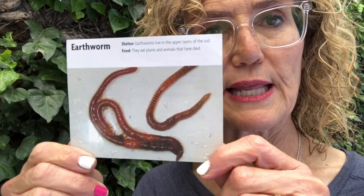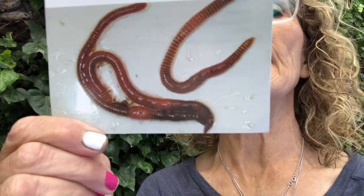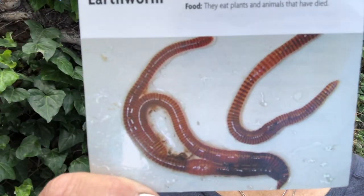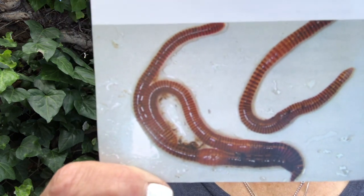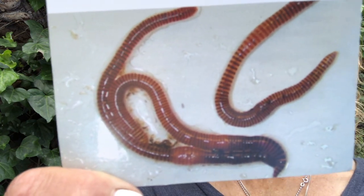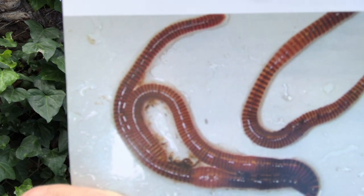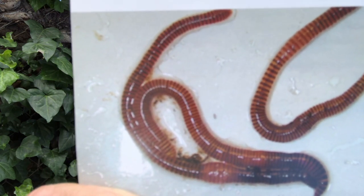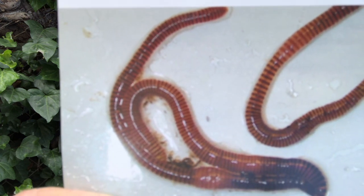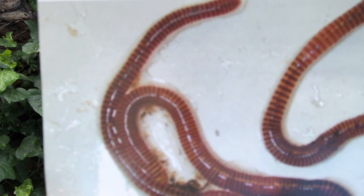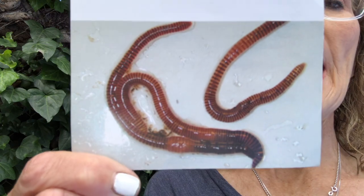One of my favorite animals is the earthworm. Earthworms live in the upper layers of the soil and eat plants and animals that have died — they are great recyclers. They decompose plants and animals and are classified as annelids. They live in the forest, wetland, grassland, and rainforest. Their predators are birds, frogs, lizards, salamanders, raccoons, and turtles. People add earthworms to gardens to help break up the soil and add nutrients.